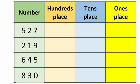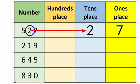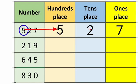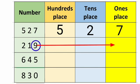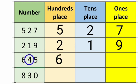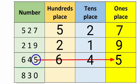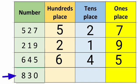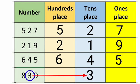Now we take some more three-digit numbers and write which digit is in which place. The first number is 527: seven is in one's place, two is in ten's place, and five is in hundred's place. The second number is 219: nine is in one's place, one is in ten's place, and two is in hundred's place. The next number is 645: six is in hundred's place, four is in ten's place, and five is in one's place. The last number is 830: three is in ten's place, zero is in one's place, and eight is in hundred's place.